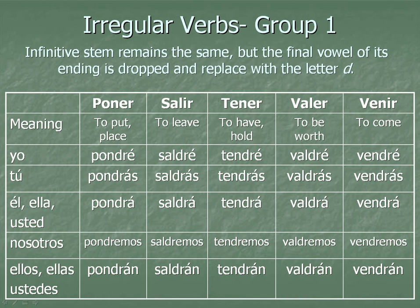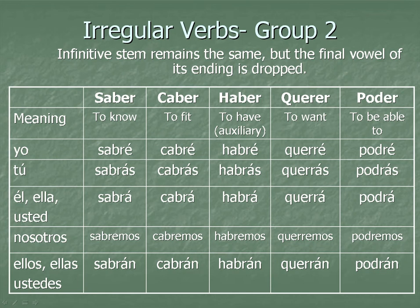Okay, this is group number two. The infinitive stem remains the same, but the final vowel of its ending is dropped. So instead of saber, they remove the E and it becomes sabr-. Notice the third verb, haber, meaning to have. Let's cover that verb on the next slide to make sure you have a firm grasp on how that verb works.